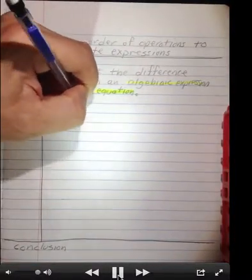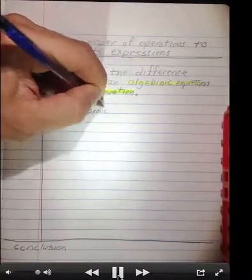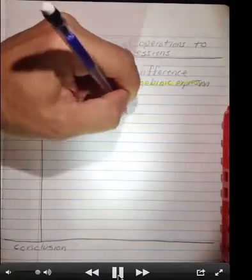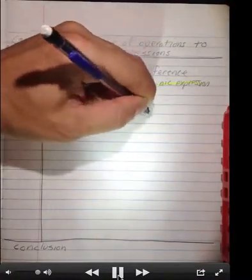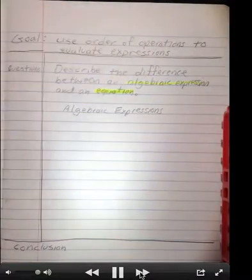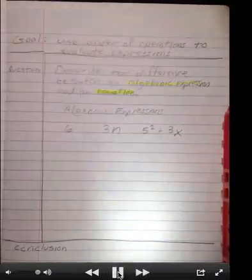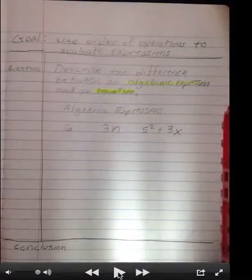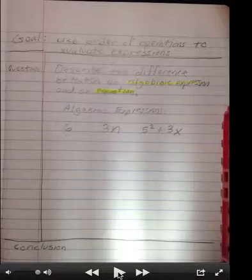So here are some examples of algebraic expressions. 6, 3n, and 5 squared plus 3x. These are examples of algebraic expressions.